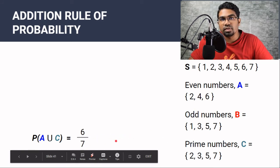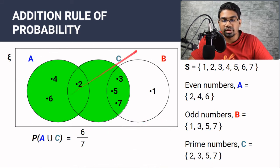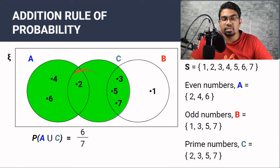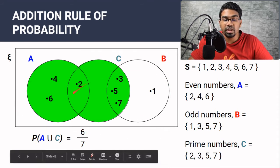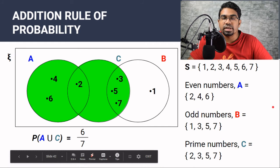Let's check with the Venn diagram. A union C is represented by the green area — all of A and all of C. A union C has 6 elements, and the total number of elements is 7. So the probability of A union C is indeed 6 out of 7. This is an example for non-mutually exclusive events.